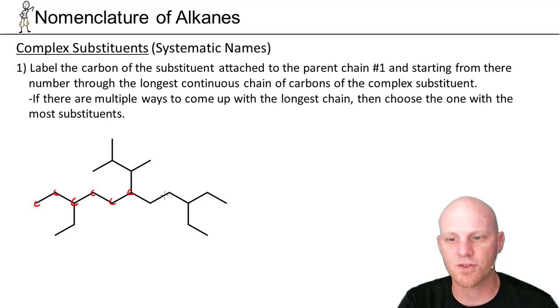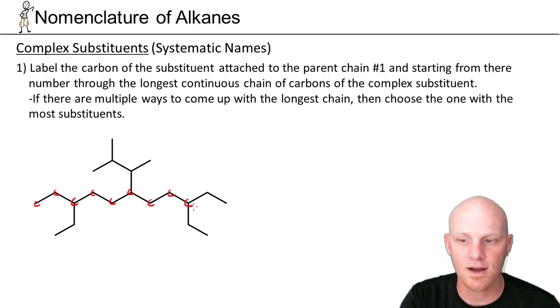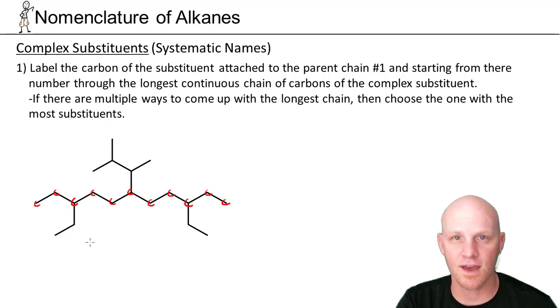It turns out we can get a longer carbon chain if we continue off to the right rather than going up at that branch point. So 7, 8, 9, and then whether I go down or off to the right, same diff in this case. I'll just pick off to the right, and there's 11 carbons. So this is going to be some form of undecane as a parent chain.